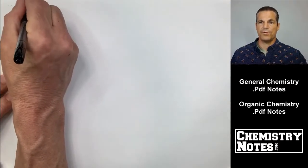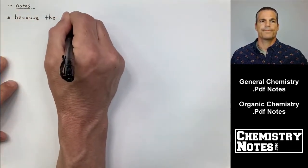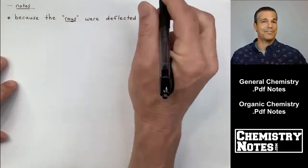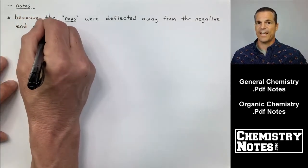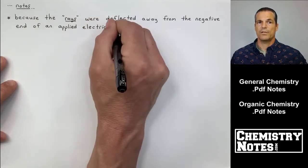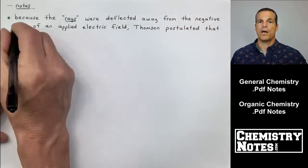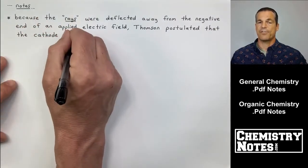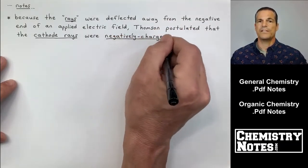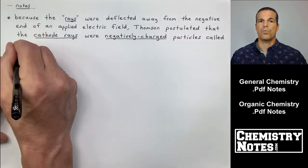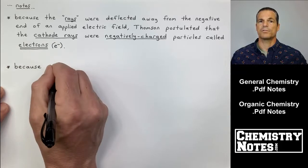Now let's move to the top of page two of today's notes. We want to make a few blanket statements about what we just saw. I'm using the term rays here because he's yet to really define that these are called electrons. Because the rays were deflected away from the negative end of the applied electric field, or because the rays were attracted to the positive end of the applied electric field, Thompson postulated that the cathode rays were negatively charged particles called electrons.